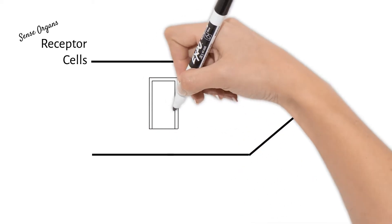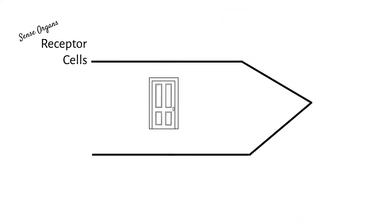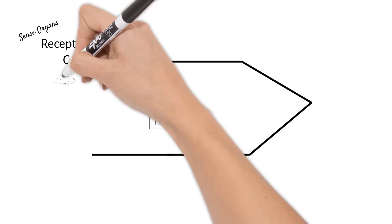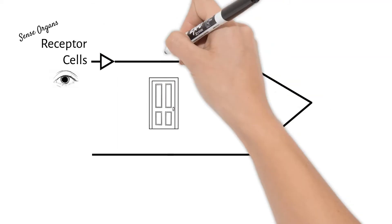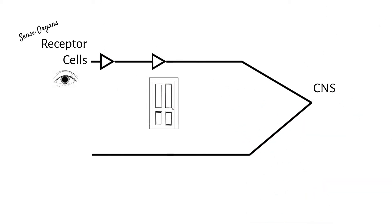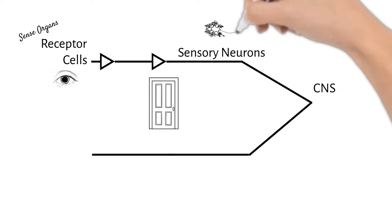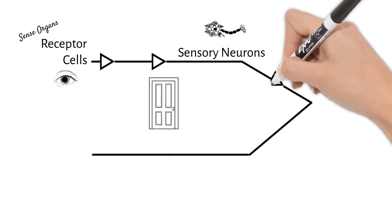For today's example, let's say you walk up to a closed door. Your eyes see that the door is closed. The information is sent then to the central nervous system by sensory neurons. They pass on that the door is closed.